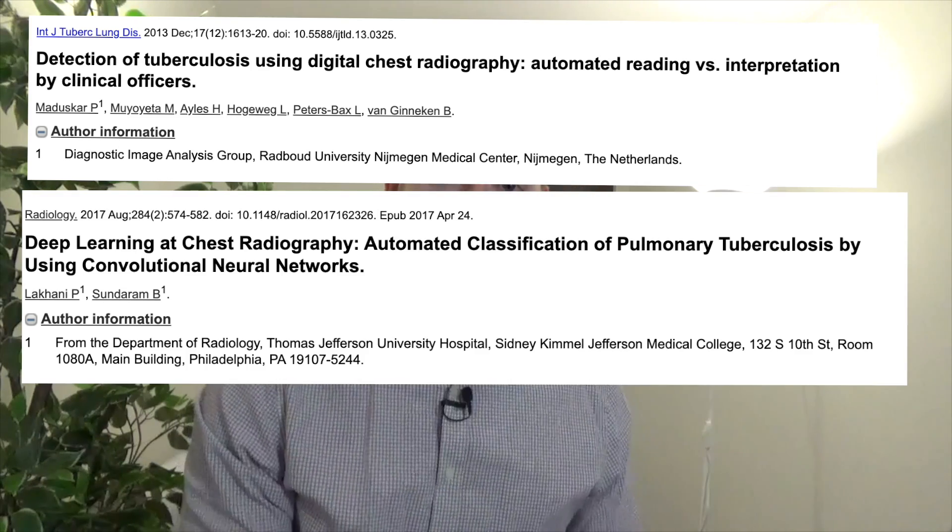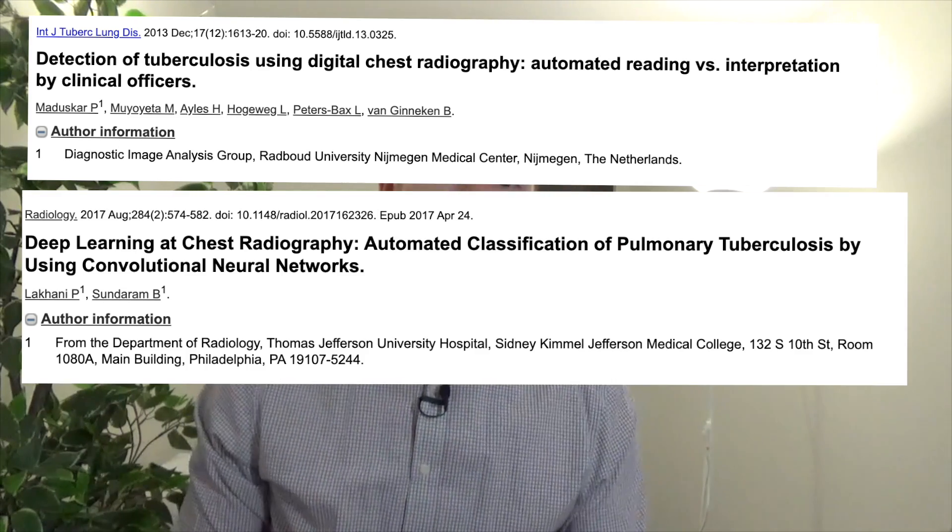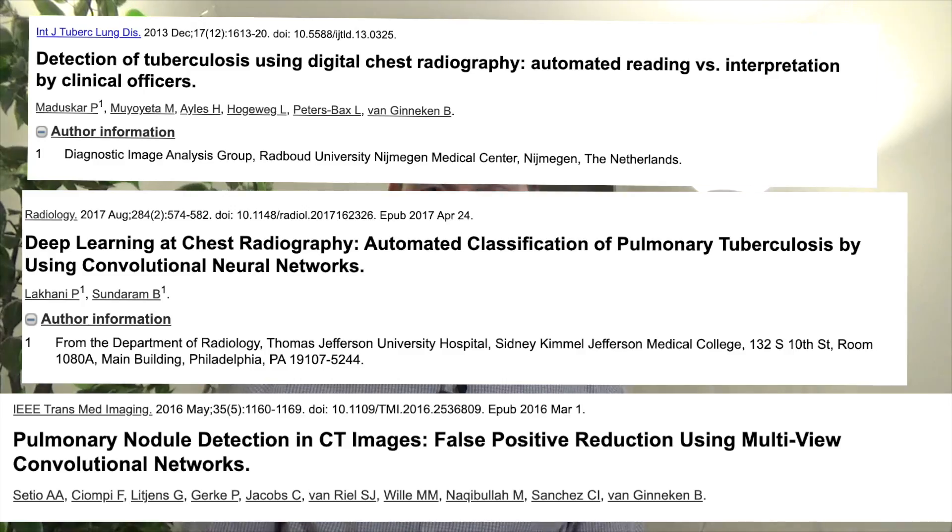So initially there were several research groups that tried to use CNNs to detect specific problems on chest x-rays. For example, a few groups looked at trying to detect tuberculosis or TB, which is a bad bacterial infection. And other people tried to look at pulmonary nodules. And these research groups showed good accuracy in these models.